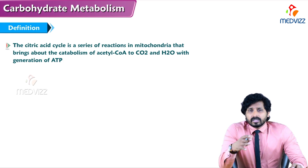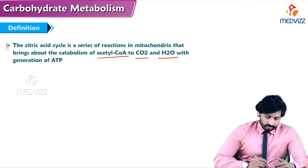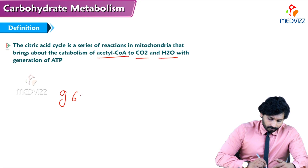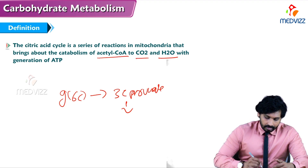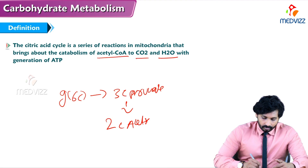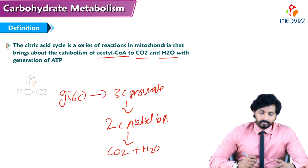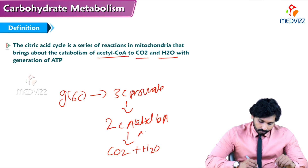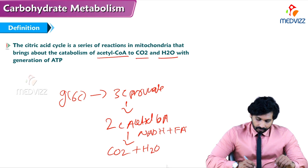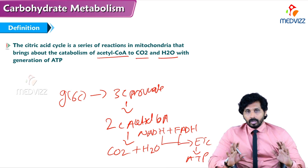Citric acid cycle is a series of reactions in mitochondria that brings about catabolism of acetyl-CoA to CO2 and water. Glucose is a 6-carbon compound; it forms 3-carbon pyruvate and finally 2-carbon acetyl-CoA, which is eventually removed as CO2 plus water — that is the oxidation of glucose. Meanwhile, a lot of NADH and FADH2 are produced, which enter the electron transport chain to produce ATP.